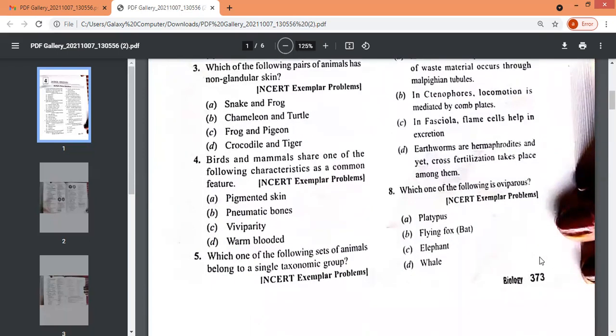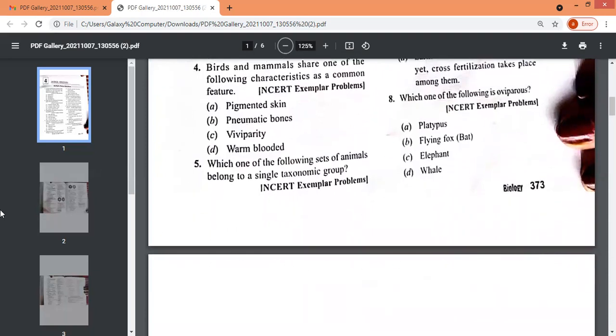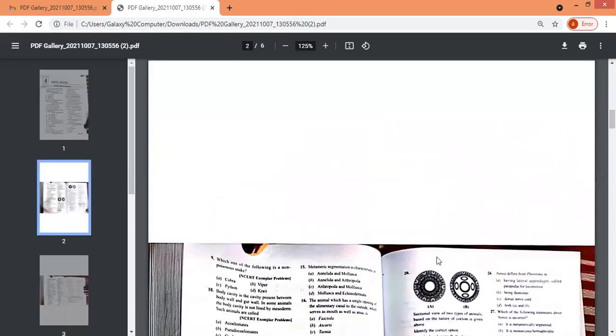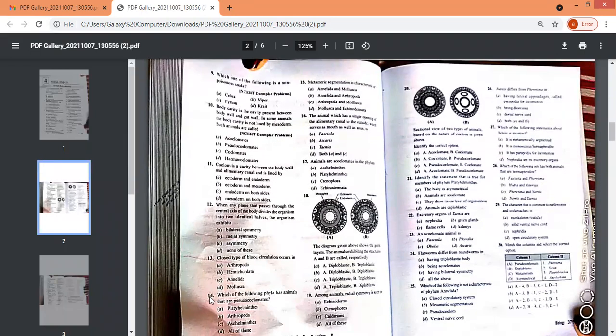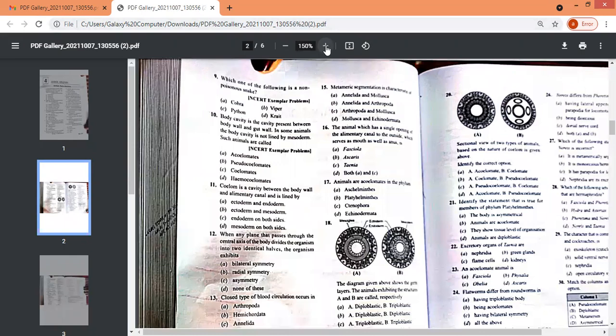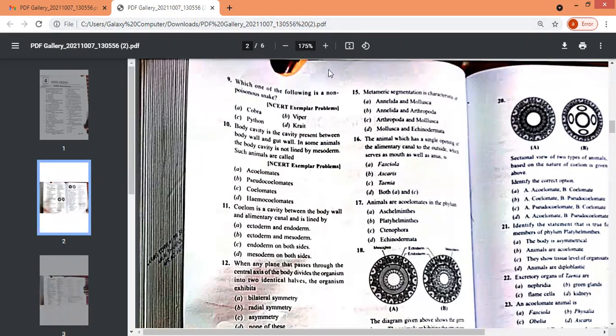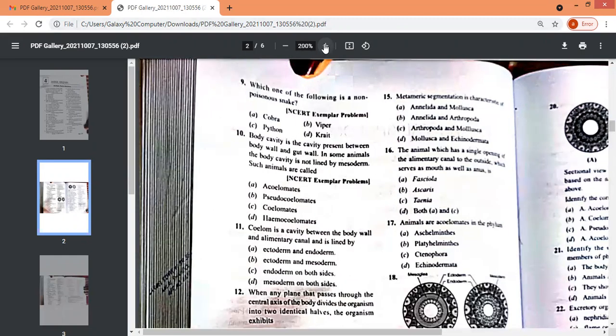Now this is eighth. So let me go to the second page. Now you can see better. So ninth question, which one of the following is a non-poisonous snake? As you can see, cobra, viper, python, krait. So you have to choose the correct one. And then comes the tenth question and eleventh is also on the screen.